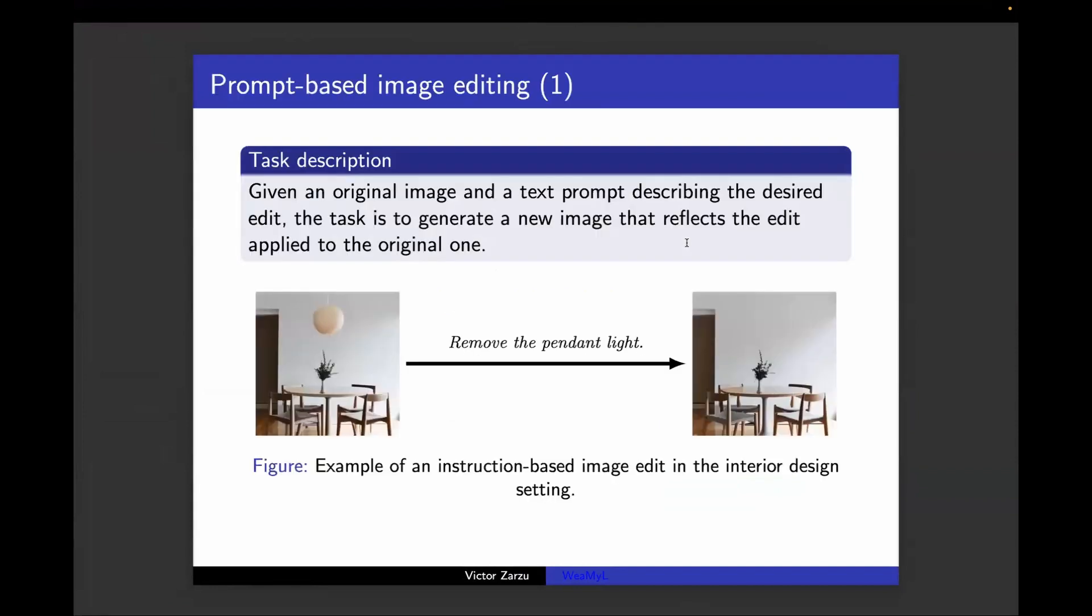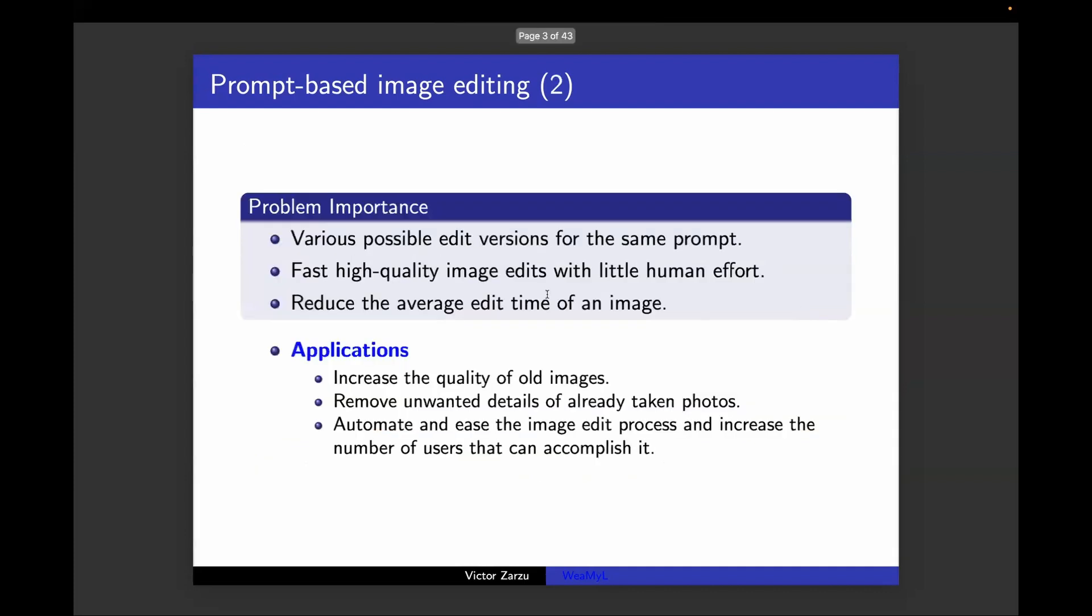I'm going to first present the task. The task is having an initial image and a desired prompt, to output the resulting image from changing some details in the initial one based on the given prompt. It can be seen here that from the initial image the pendant light was removed by some algorithm.